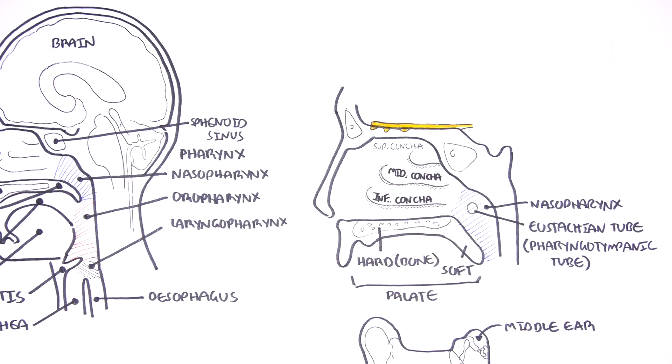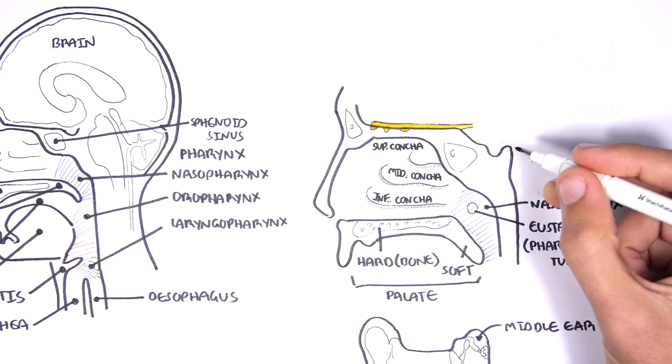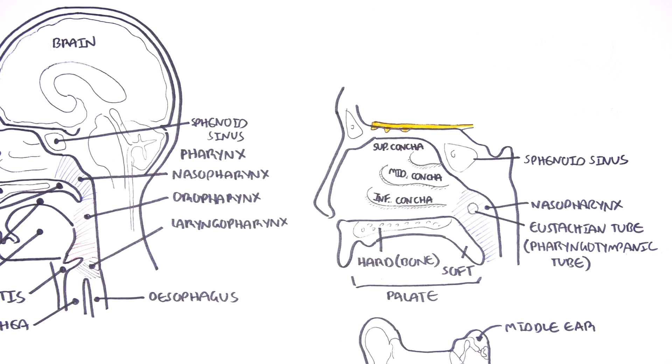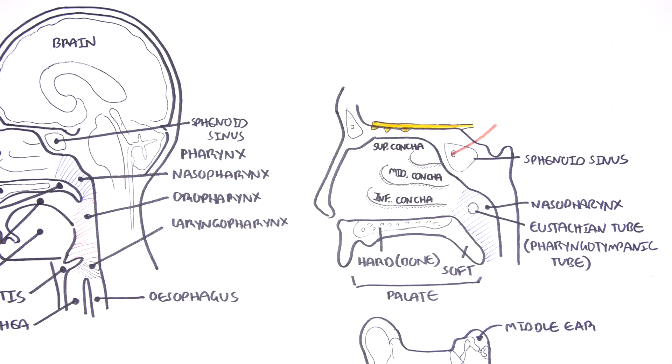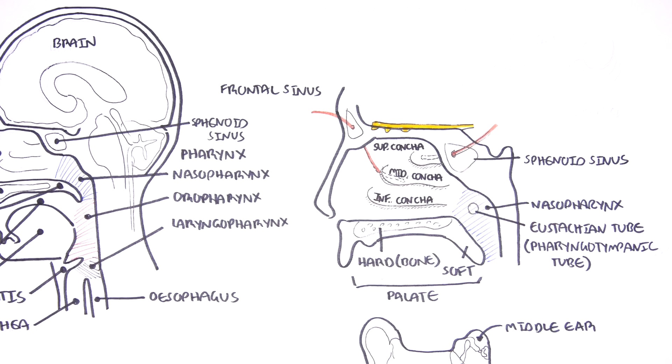Now, behind each respected concha, you have the nasal meatus. Some of the sinuses drain into the meatus. This really tells us that the sinuses and the nasal cavity are joined together as well. So for example, the sphenoid sinus drains into the superior meatus behind the superior concha. The frontal sinus drains into the middle meatus.